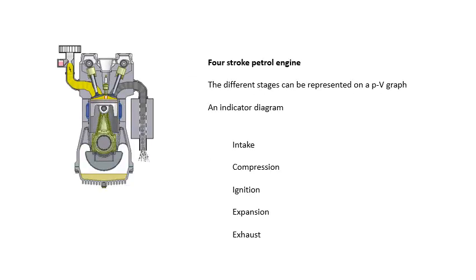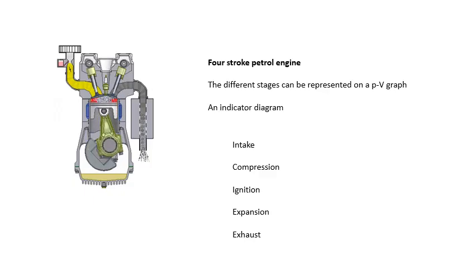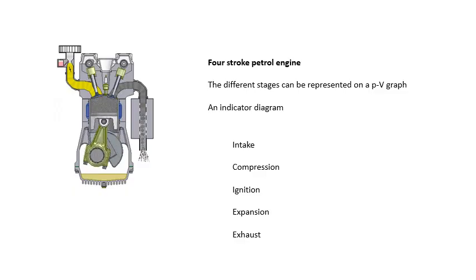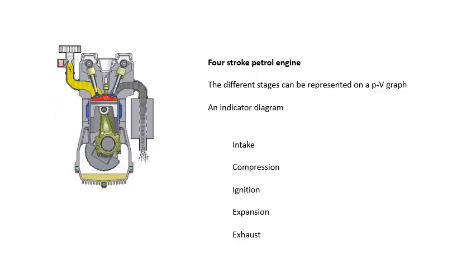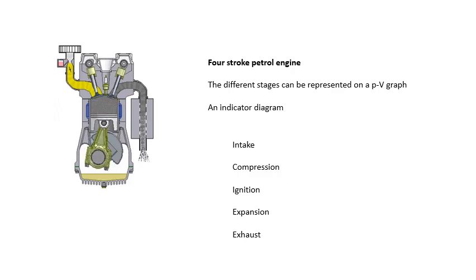Now this is a four-stroke petrol engine. Looking at it, we start at the beginning — four strokes, four different bits of it. And the different stages can be represented on a PV graph. We talked about PV graphs in the last video on an indicator diagram.